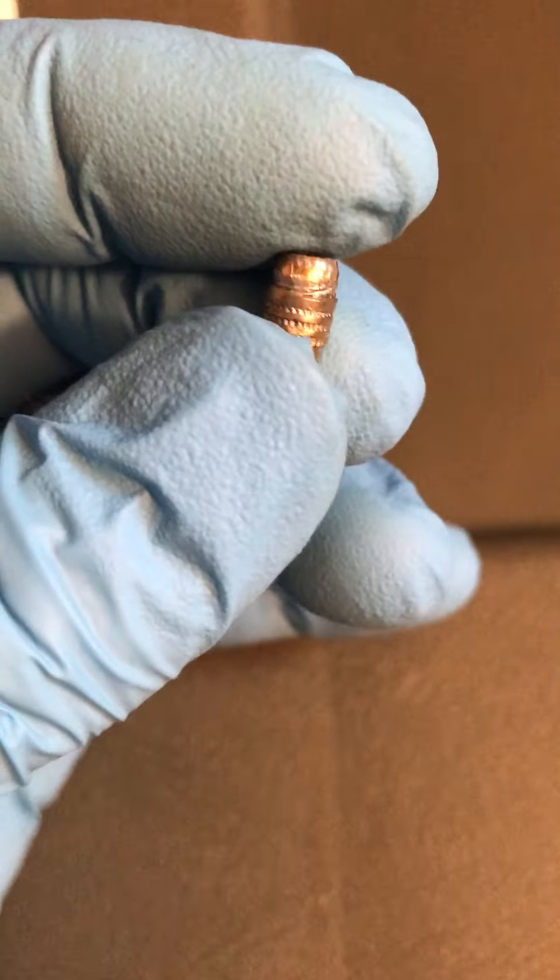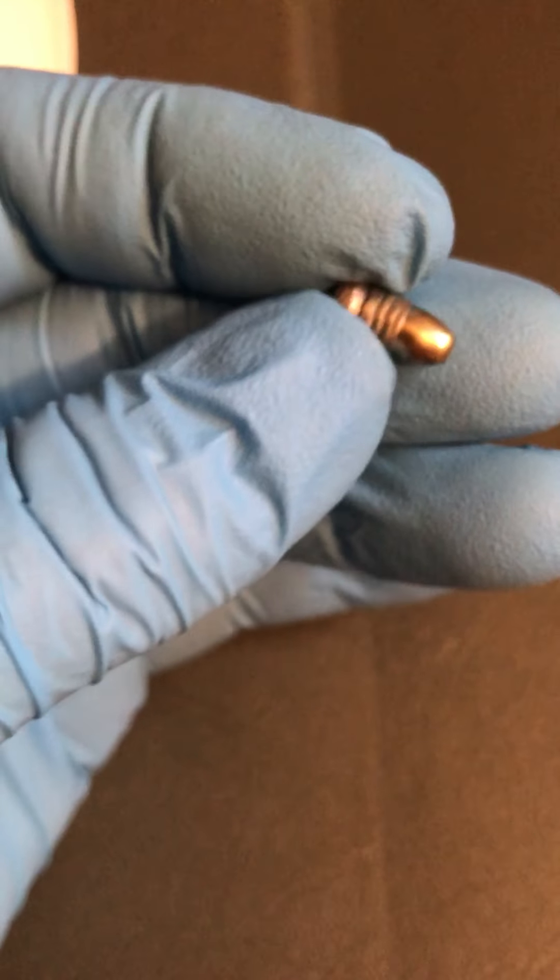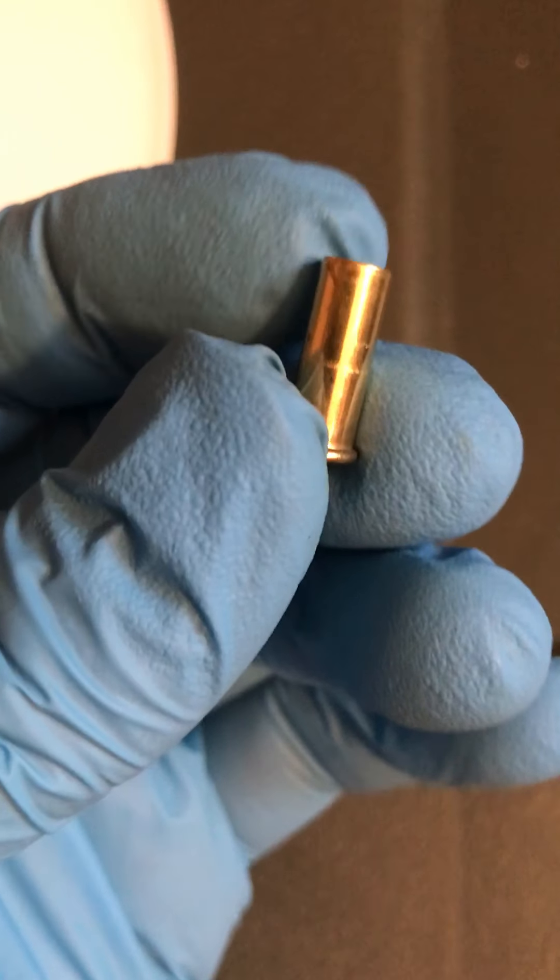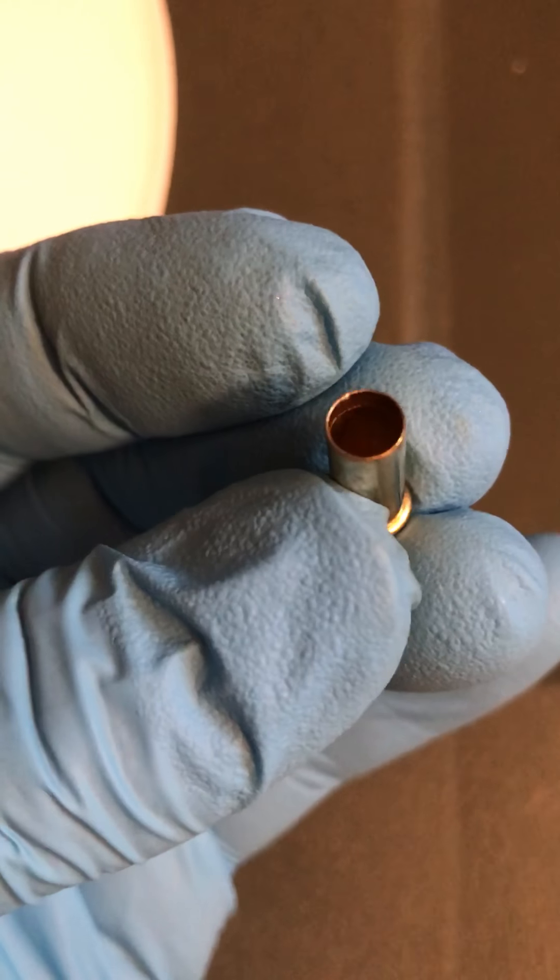It does have an indent there. Not really too impressed with this bullet though. It's just plated, it's not a copper jacket, it's just plated and you can tell that from it. Now here's the case here. You can kind of see where the bullet was crimped in right there.